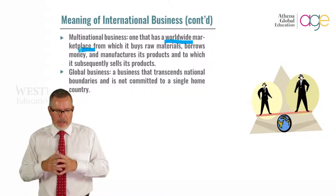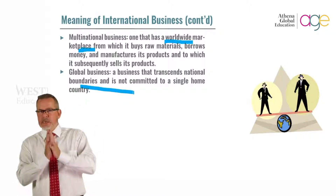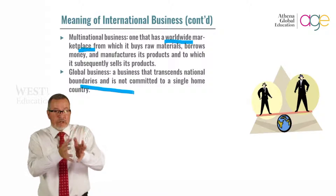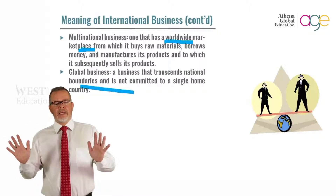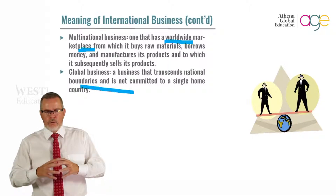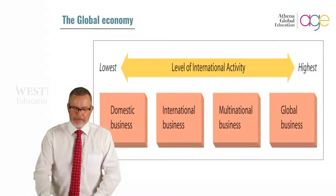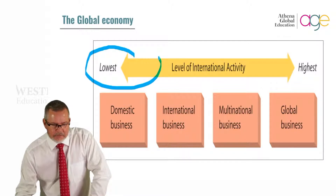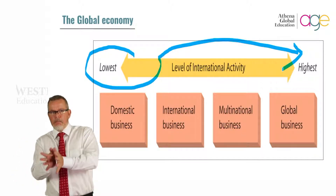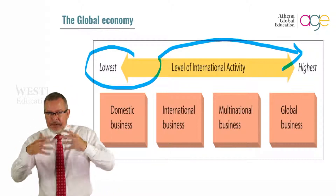The last one is global. A global business transcends national boundaries — it's not committed to a single home country. So looking at this progression: domestic, international, multinational, and ultimately global. As you can guess, their impact will be different on the environment because they're operating on a larger scale. It's important to understand these differences because the environmental impact would be different.